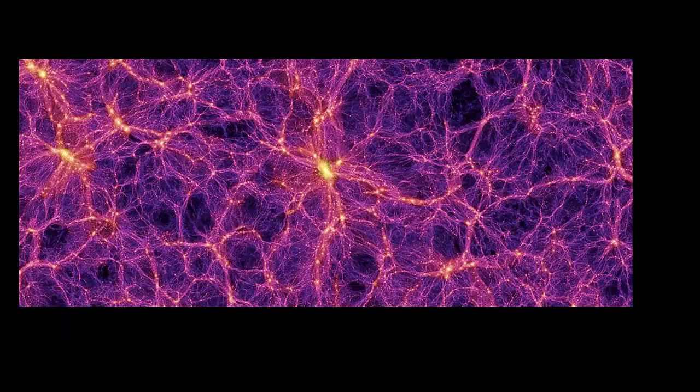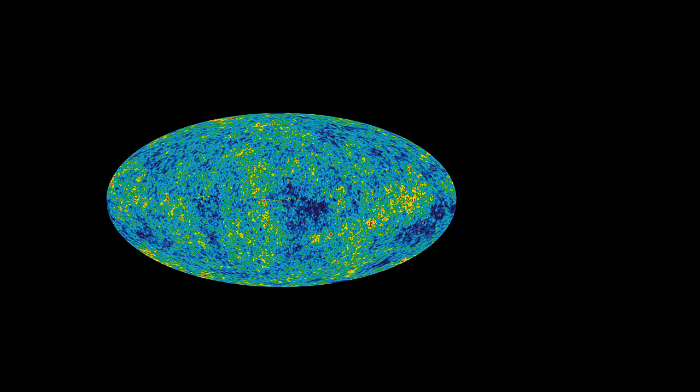Some galaxies are grouped together into clusters or super clusters that spread across the universe. In between stars in a galaxy and in between the galaxies there is almost nothing, essentially a vacuum.